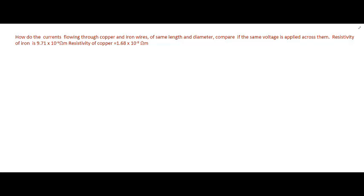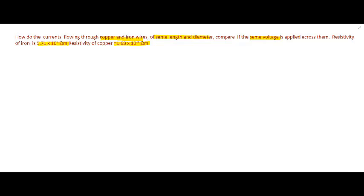Read the question carefully after pausing the video. This question is talking about the current flowing through two wires of same length and diameter but made of different materials. The same voltage is applied across them. Different materials have different resistivities, which are given in the question. So this question is a simple Ohm's law problem.